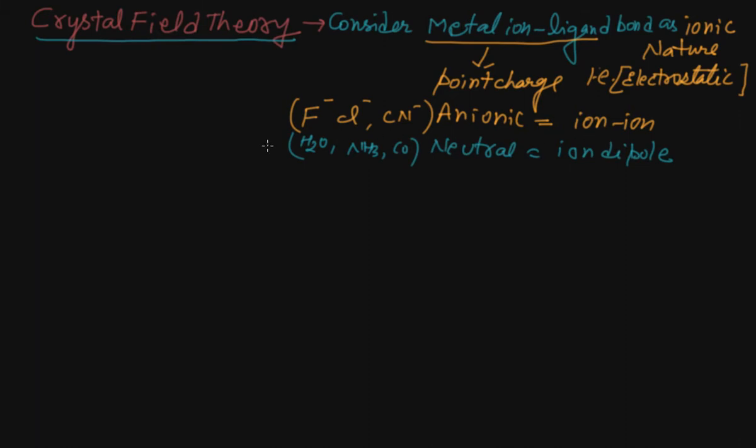In this, degeneracy of the d orbitals is maintained. Whenever degeneracy breaks down, it will cause splitting of the orbitals depending upon the ligand which is approaching.